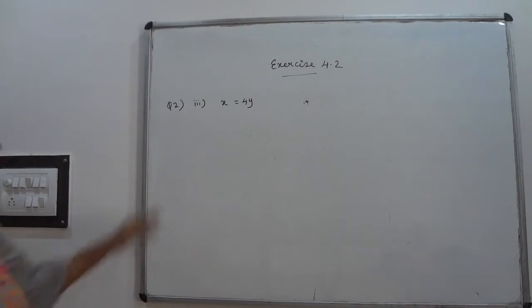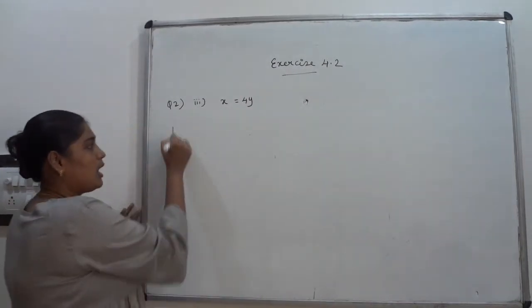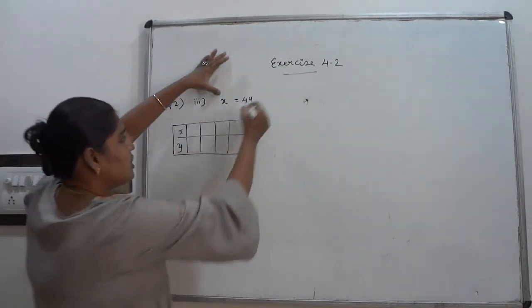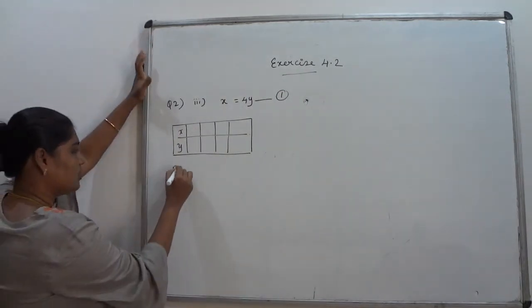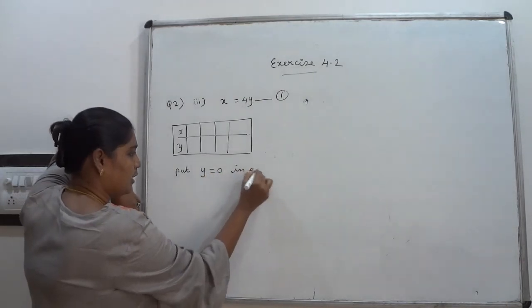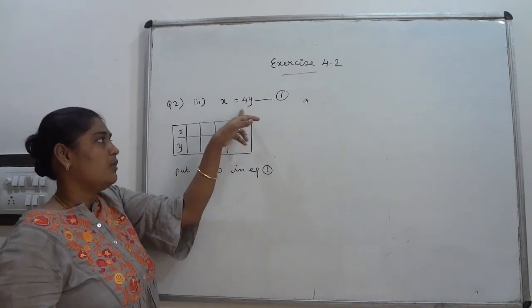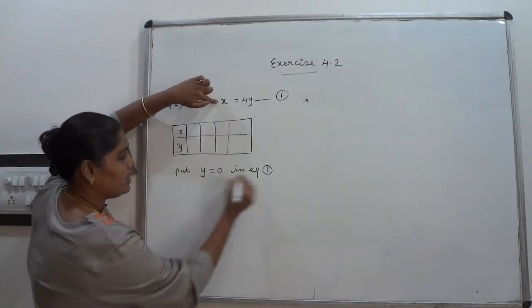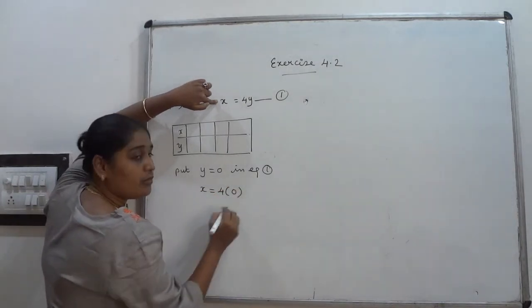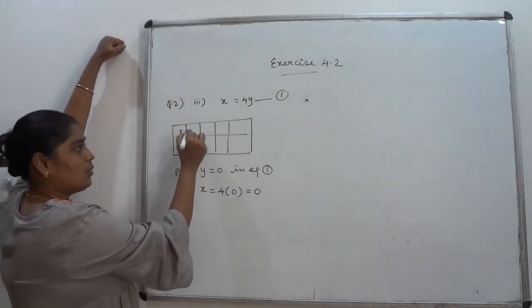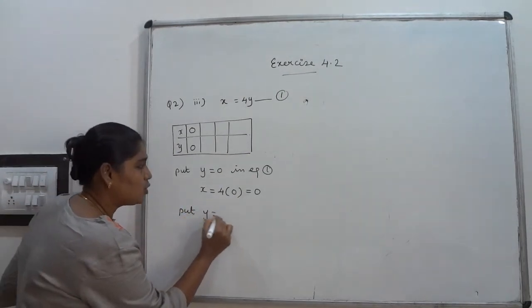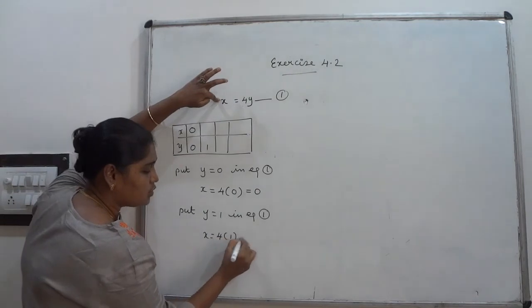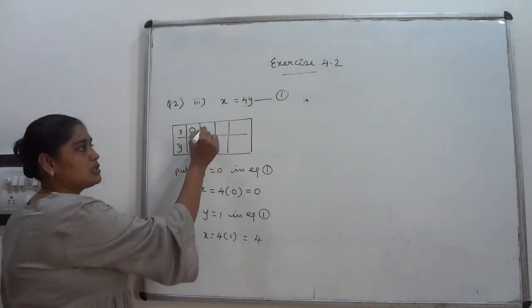Question 2, third part: x = 4y. Find 4 solutions. I mark this as equation number 1. I vary y since y is in multiplication — it gives answers simply. Put y = 0: x = 4 × 0 = 0. Put y = 1: x = 4 × 1 = 4.